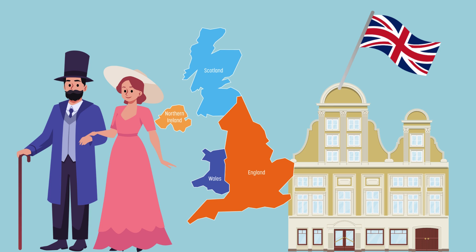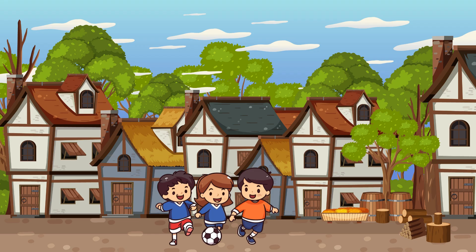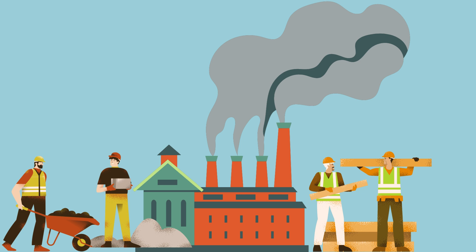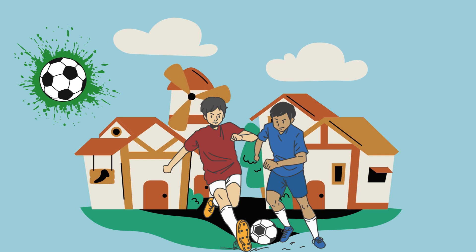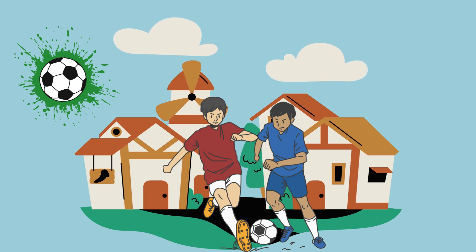Modern soccer originated in Britain in the 19th century. Since before medieval times, it was known as folk football. They were played in towns and buildings according to local customs and with a minimum of rules. However, with the cities growing, there was less time for leisure and there were prohibitions against particularly violent and destructive forms of folk football.